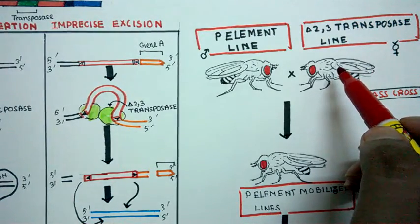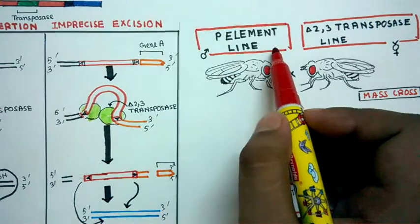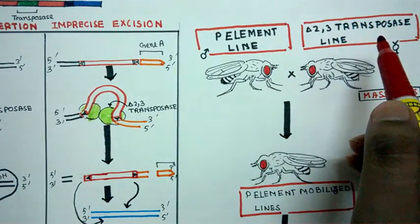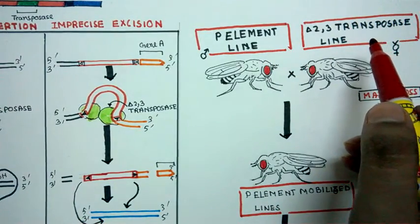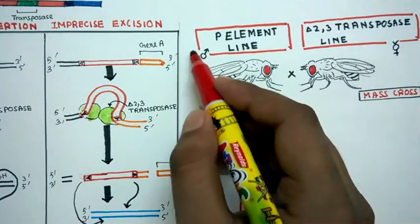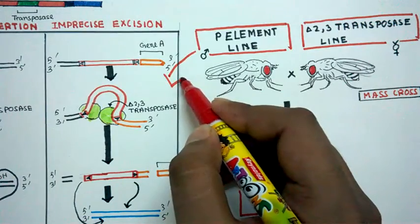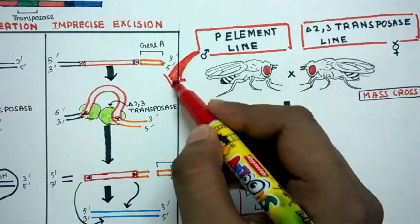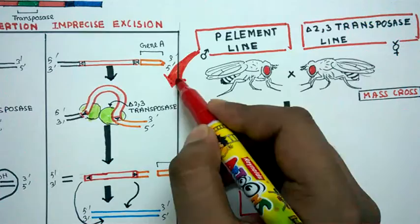The whole bottom line is our P-element is defective, our transposase is defective. So that is why, if we get back into our diagram, what we would see is that when the excision is happening, it's imprecise.